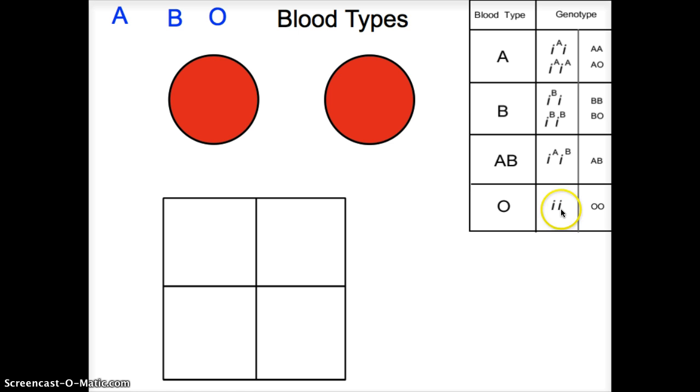O would mean that you essentially have O, O as a genotype. AB, same thing. You have A, B as a genotype. But if you look here at A and B, if you're A, you can be A, A, or A, O.